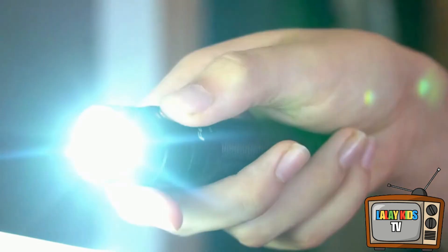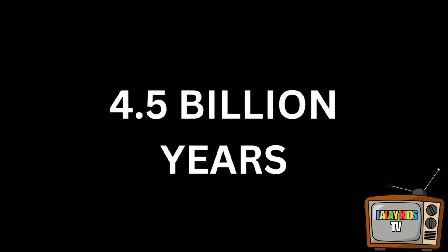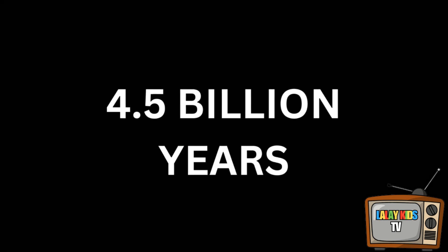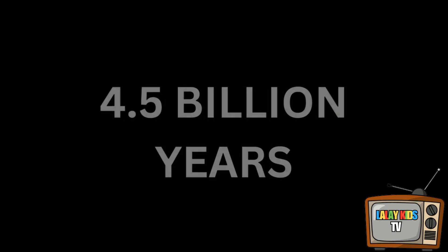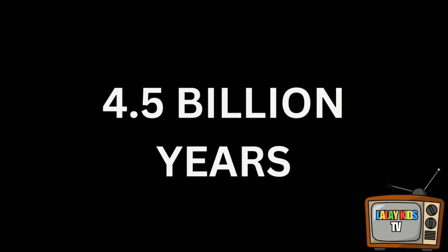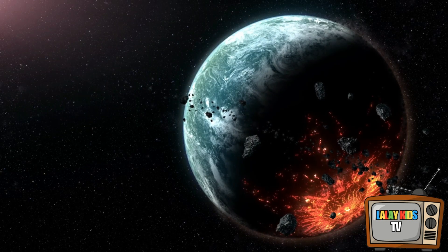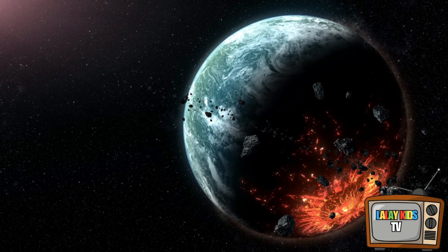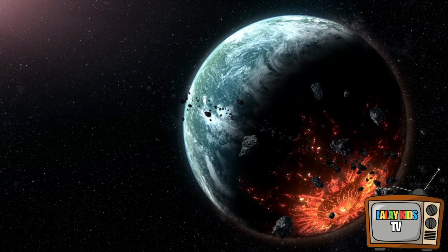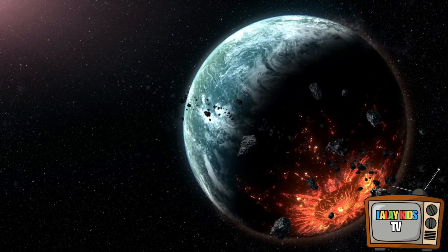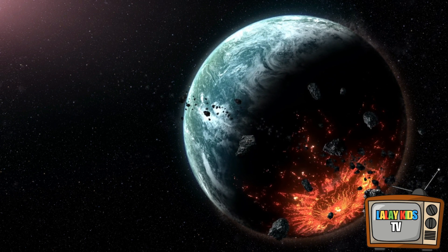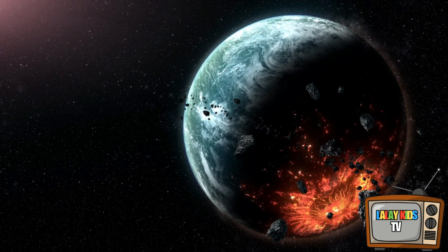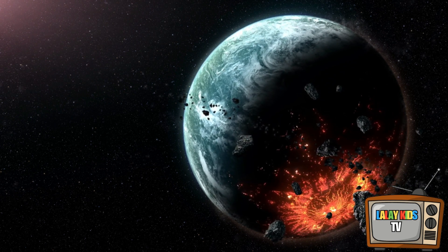The origin of the moon remains a subject of scientific debate. The prevailing theory is that the moon formed about 4.5 billion years ago, shortly after the Earth. The most widely accepted hypothesis suggests a giant impact scenario: a Mars-sized celestial body, often referred to as Theia, collided with Earth, leading to the ejection of materials that eventually merged to form the moon.